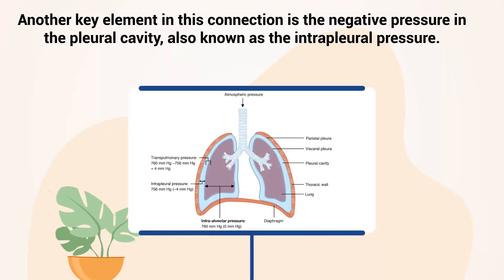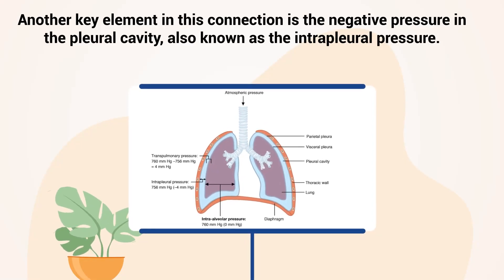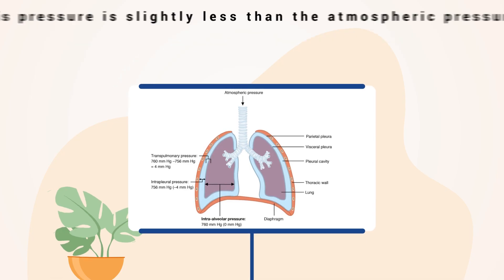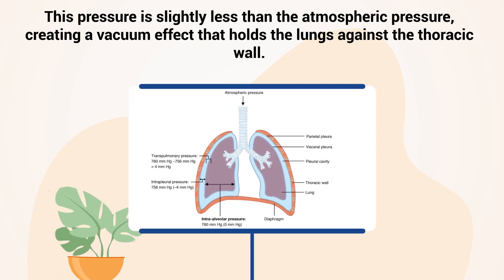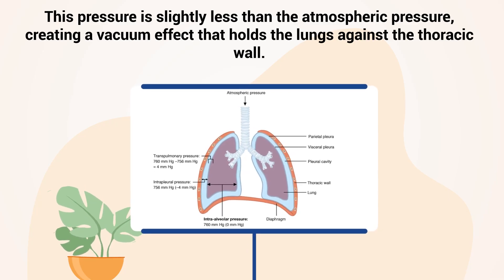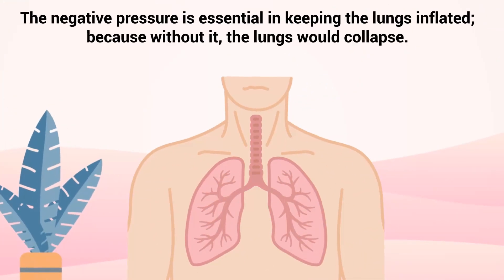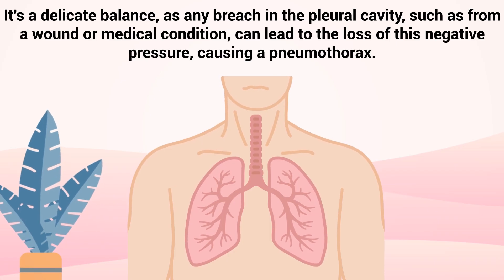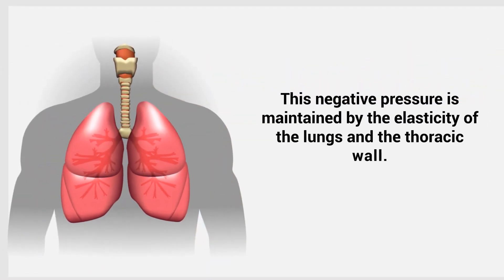Another key element in this connection is the negative pressure in the pleural cavity, also known as the intrapleural pressure. This pressure is slightly less than the atmospheric pressure, creating a vacuum effect that holds the lungs against the thoracic wall. The negative pressure is essential in keeping the lungs inflated, because without it the lungs would collapse. It's a delicate balance, as any breach in the pleural cavity — such as from a wound or medical condition — can lead to the loss of this negative pressure, causing a pneumothorax.